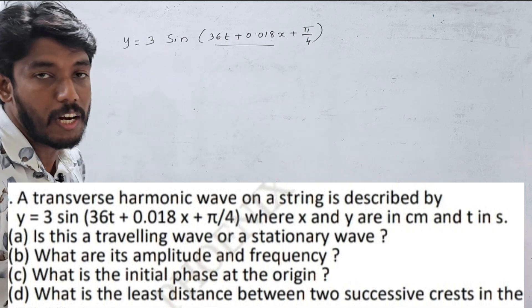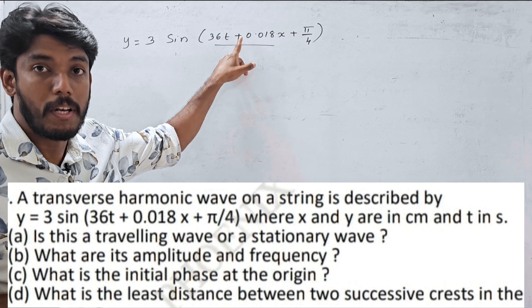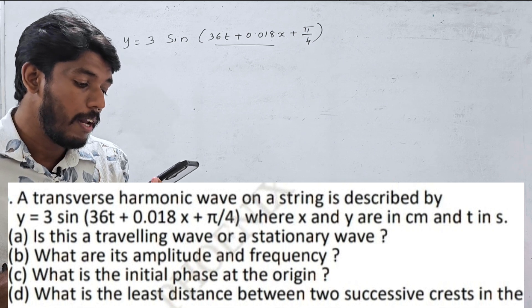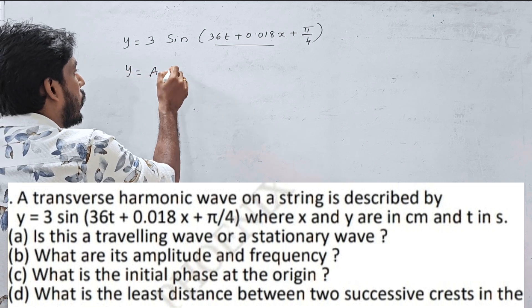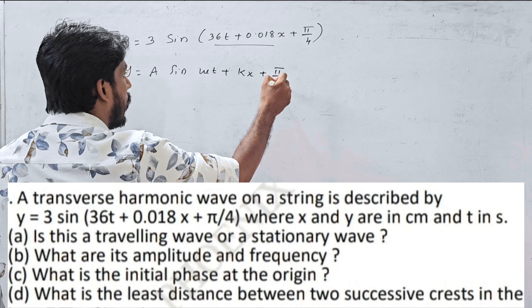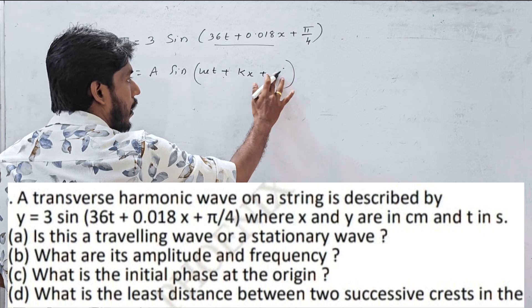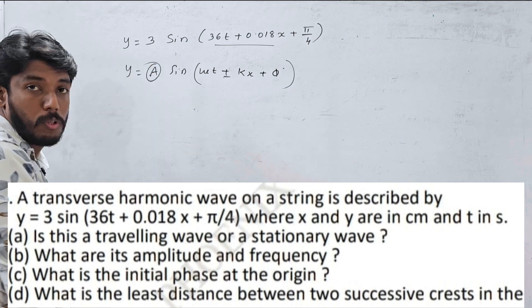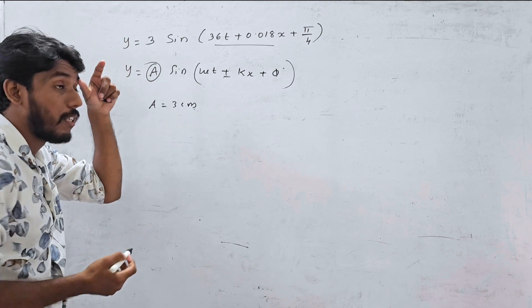This is a wave problem. We have a wave traveling, and t is time, x is position. The amplitude, frequency, and the main wave equation is y = A sin(ωt + kx + π/4). Here A is equal to 3, so the amplitude equals 3.